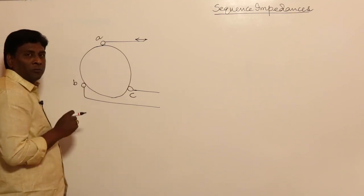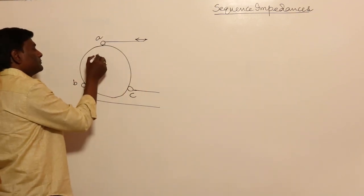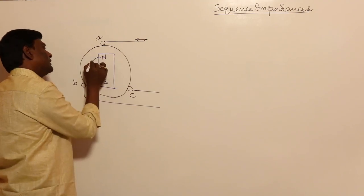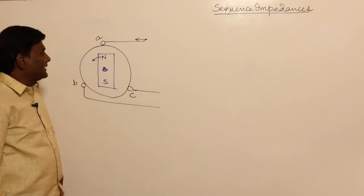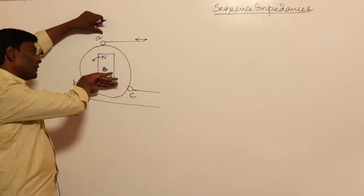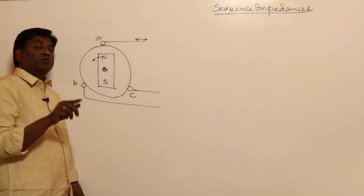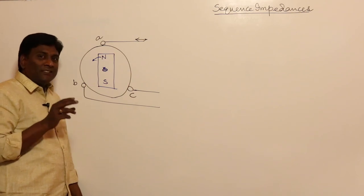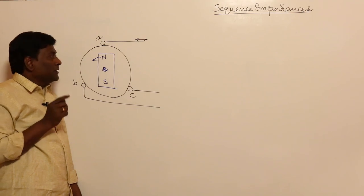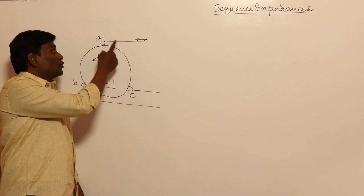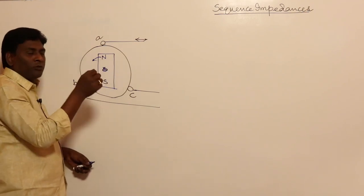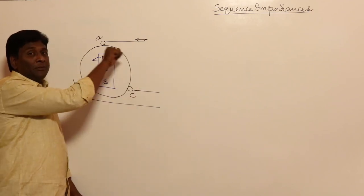If I supply positive sequence currents, consider the rotor with N pole and S pole rotating in one direction. For a generator, when the N pole aligns with phase A, voltage is maximum at A; after 120 degrees, B is maximum; after another 120 degrees, C is maximum. So the phase sequence of the induced voltages is A, B, C. This means the induced voltages are positive sequence only, since the generator rotates in a fixed direction.